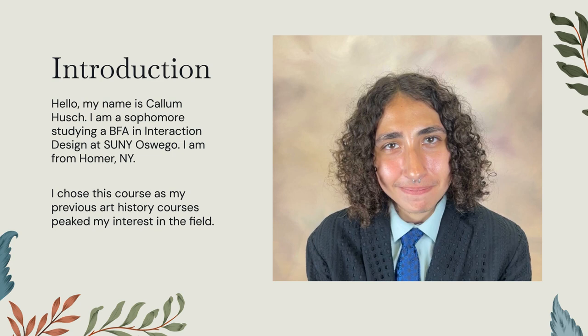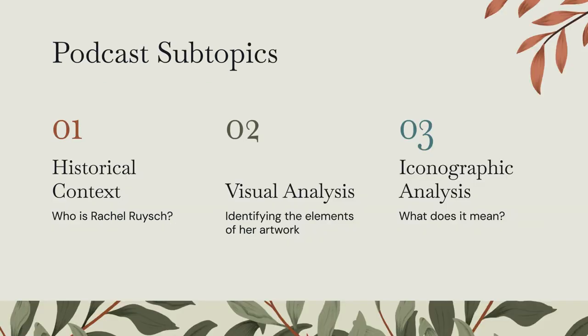I'm from Homer, New York, which is right outside of Cortland. I chose to take this course as my previous art history courses piqued my interest in the area. I enjoy learning the history and being able to place the artwork and the influences on a geographical level. I'm going to be covering three main subtopics in this podcast: historical context, visual analysis, and iconographic analysis.